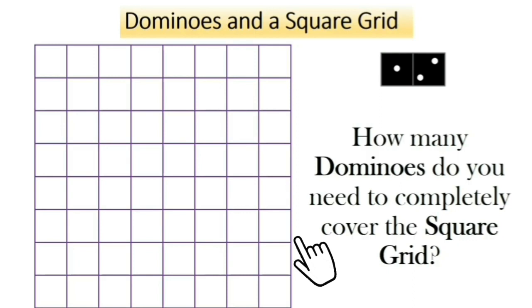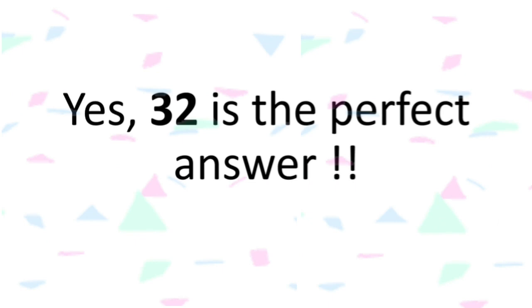Let's start with a simple problem. On your screen you see an 8 cross 8 square grid and a domino. The question is, how many dominoes do you need to completely cover the square grid? We have 64 squares and a domino covers 2 squares. So 64 divided by 2 is 32. Let's check it out. Oh yes, 32 is the perfect answer.